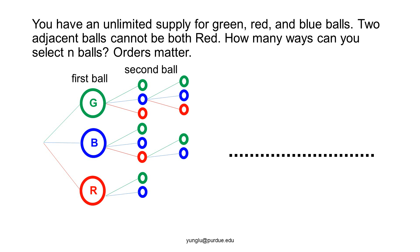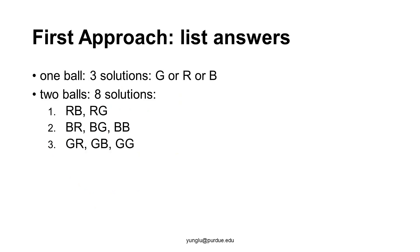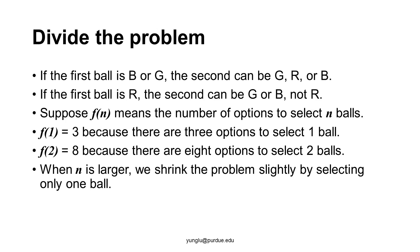We can solve the problem by listing all solutions when N is 1 or 2. When N is 1, we need to select only one ball, and there are three solutions: green, blue, or red. When N is 2, there are eight solutions.